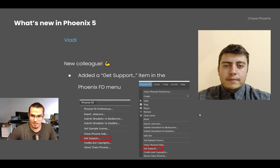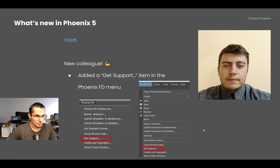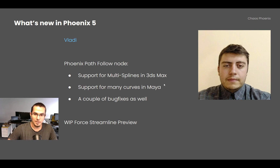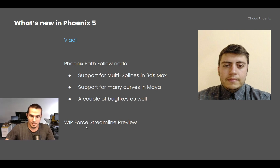Vladi is a new colleague who joined the Phoenix team two months ago. His first addition was a Get Support menu item for Max and Maya, so you can report bugs, crashes, or ask questions directly to Chaos support. He's been working on the Phoenix Path Force node to support multiple curves in 3ds Max and multiple curves in Maya — previously only the first curve was used, now all of them are. He is now working on a streamline preview for forces.